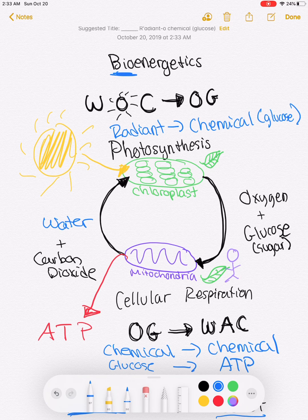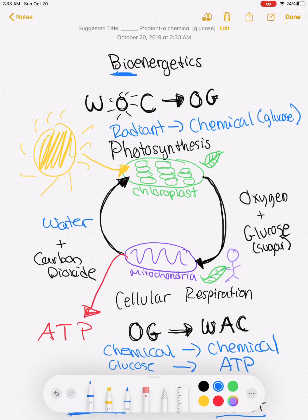These are the energy transformations that occur in both processes, and you'll notice this is a continuous cycle. All of this energy comes from the sun, producing oxygen and glucose, which then produces ATP, water, and carbon dioxide. That water and carbon dioxide is used again in the chloroplast for photosynthesis, and the cycle continues — with energy being transformed the whole way through.